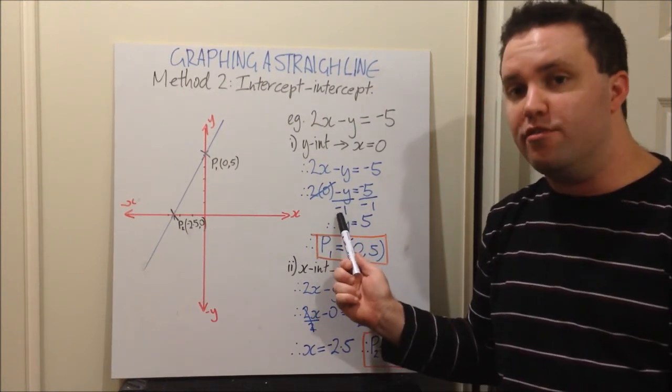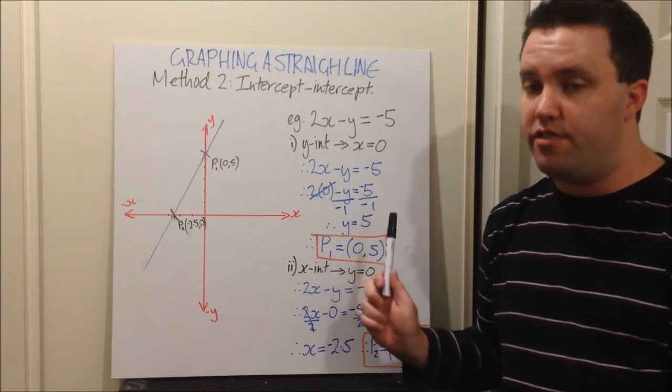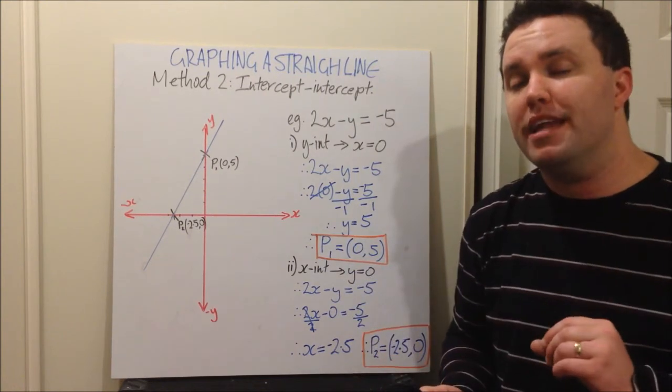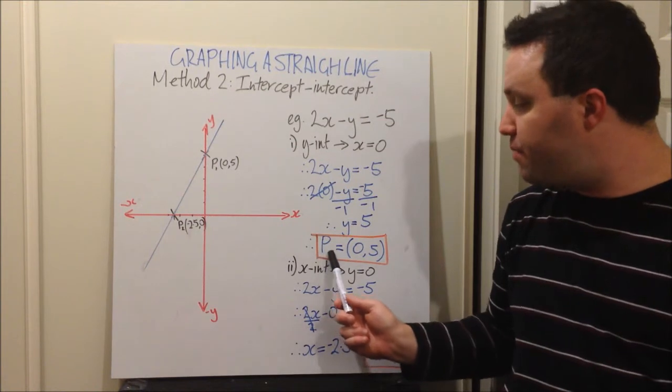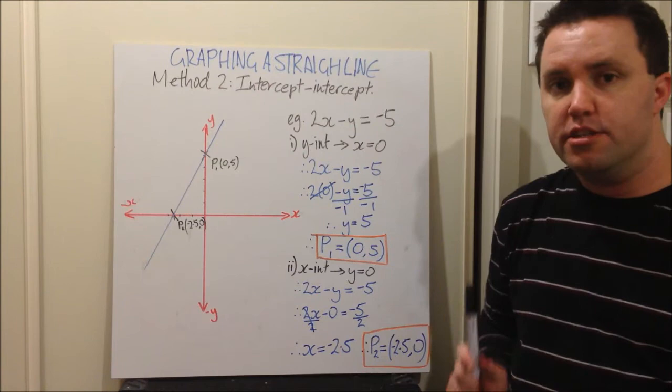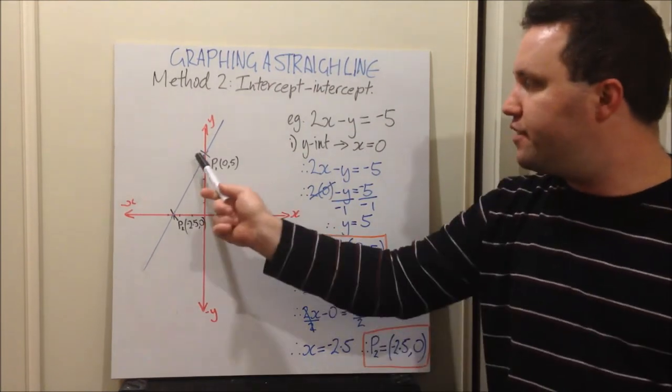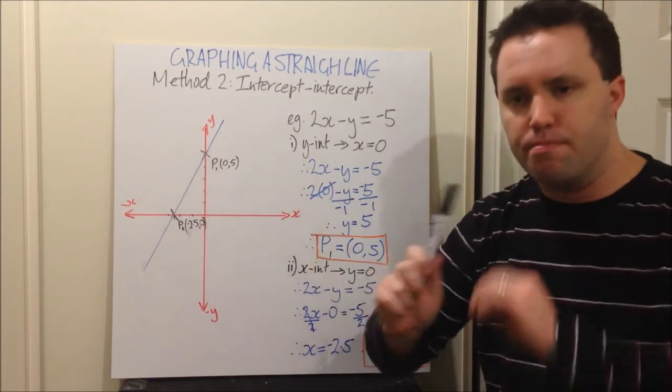Therefore my y is 5, because negative y divided by negative 1 is y, negative 5 divided by negative 1 is 5. So we're left with y is 5. A good thing to get into practice now is then to state straight away, my first point is equal to x is 0, y is 5. So my point is 0 comma 5. Go straight over to your graph, find it. x is 0, y is 5, cross, bang, there it is.